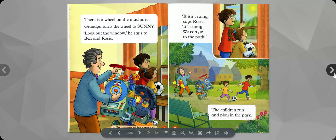There is a wheel on the machine. Grandpa turns the wheel to Sunny. Look out the window, he says to Ben and Rosie. It isn't rainy, says Rosie. It's sunny. We can go to the park.